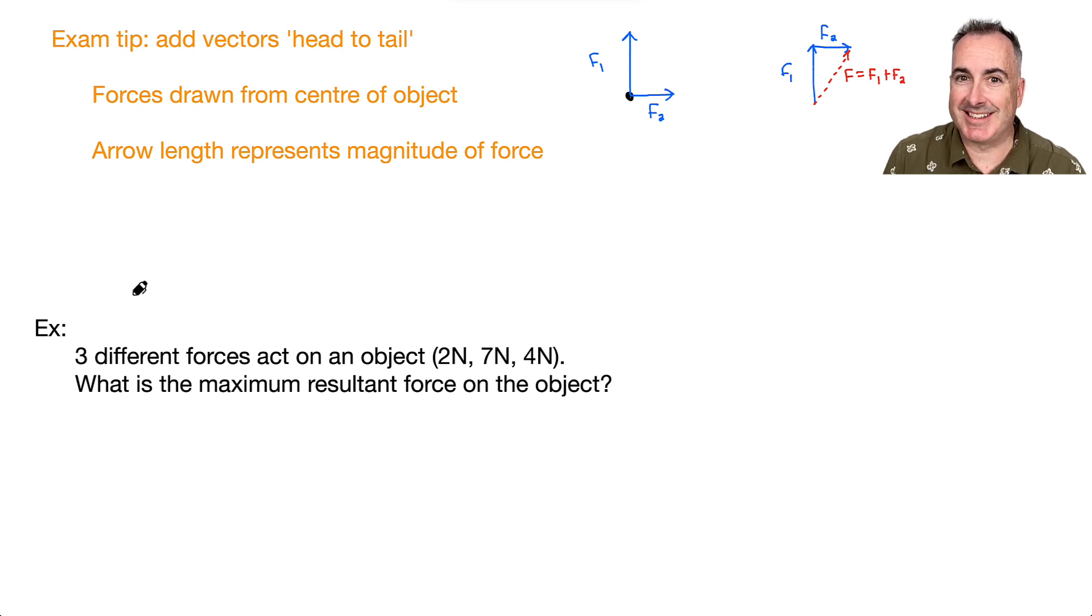Let's look at a sneaky example. They tell you that three different forces act on an object: 2N, 7N, 4N. Notice they don't tell you what direction. They could be any direction. But they're saying, what's the maximum resultant force? If I added up all these three different forces, what's the maximum?